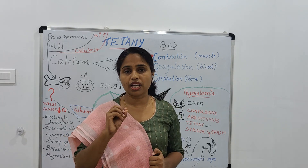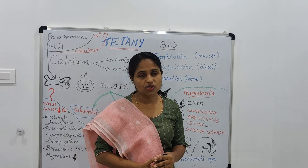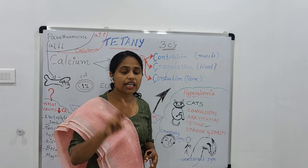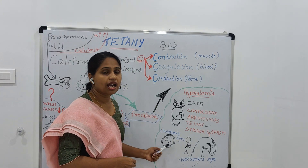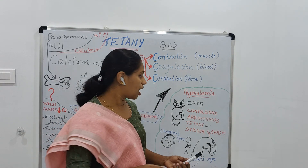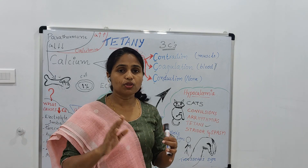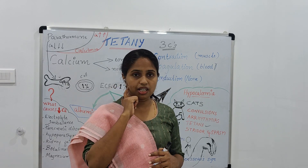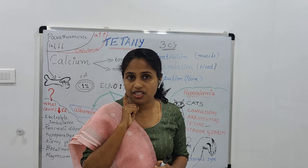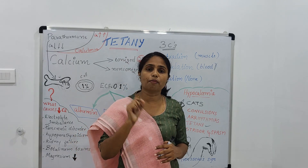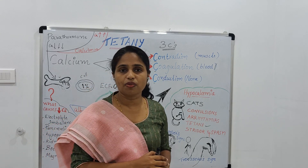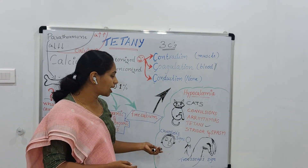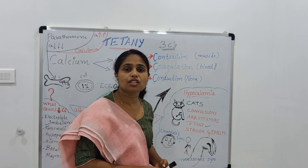To assess hypocalcemia, a detailed history and physical examination are important. The two main physical examination signs are Chvostek's sign and Trousseau's sign. To perform Chvostek's sign, ask the patient to sit in a chair and stimulate the facial nerve. If it causes muscle twitching of the facial muscles, it indicates hypocalcemia and Chvostek's sign is positive.